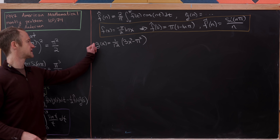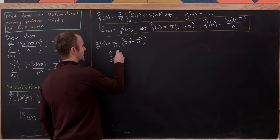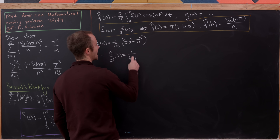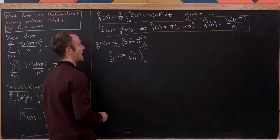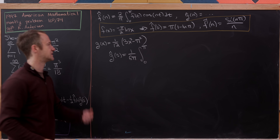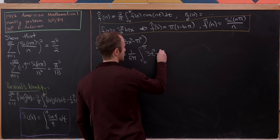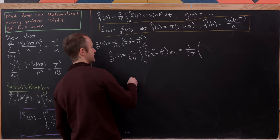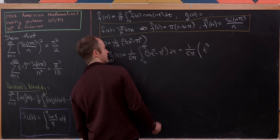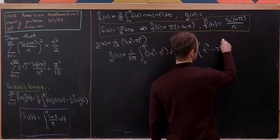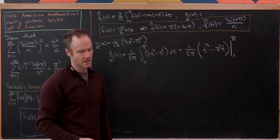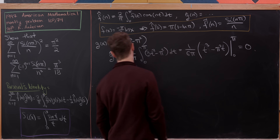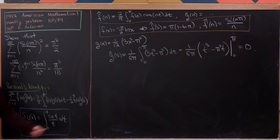We take g(x) = (1/12)(3x² − π²). Let's calculate ĝ(0): it's (2/π)·(1/12) = 1/(6π) times the integral from 0 to π of (3t² − π²) dt. The antiderivative gives t³ − π²t; evaluated from 0 to π, we get π³ − π³ = 0. So ĝ(0) = 0, meaning that term vanishes in Parseval's identity.